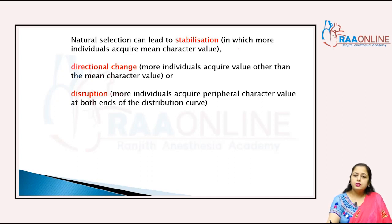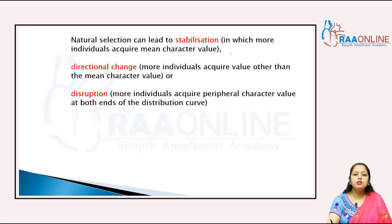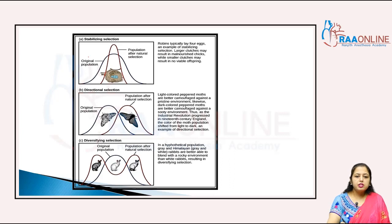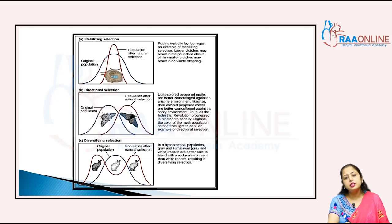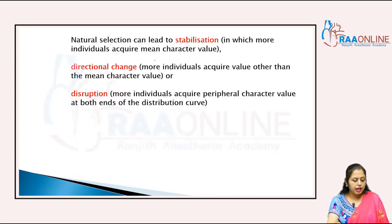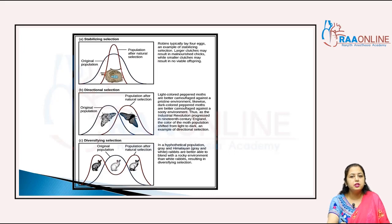In stabilizing selection, more individuals acquire the mean character value. That was the original population, and after natural selection this is the selection criteria of the population. This is called stabilizing selection — meaning there is no variable offspring, the population remains stable.